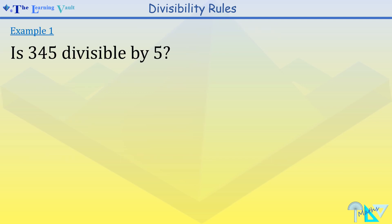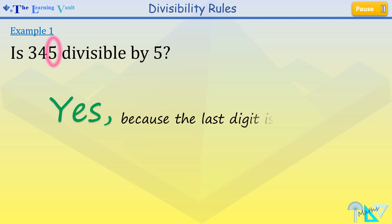Example 1. You may pause and have a go. Is 345 divisible by 5? Yes, because the last digit is 5.